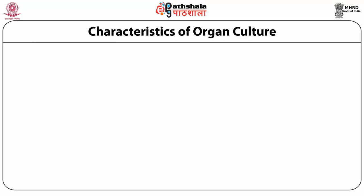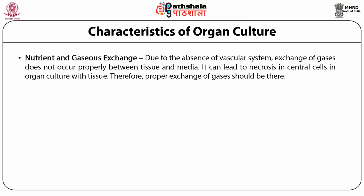Characteristics of organ culture: the first characteristic is nutrient and gas exchange. Due to the absence of a vascular system, exchange of gases does not occur properly between tissue and media. This can lead to necrosis in central cells in organ culture. Therefore, proper exchange of gases should be maintained while dealing with organ culture.